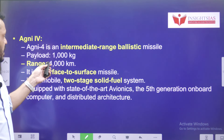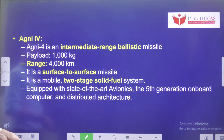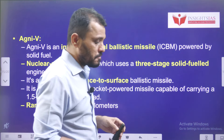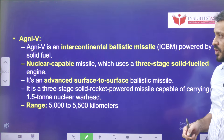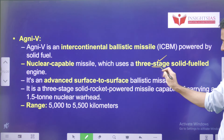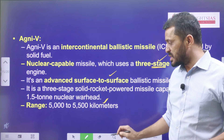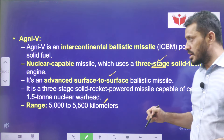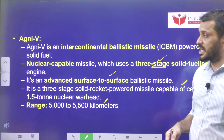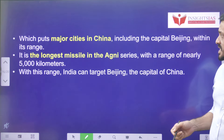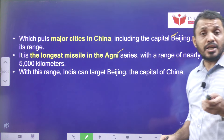Agni 4 has a range of around 4000 kilometers, a payload of 1000 kg, and is a surface-to-surface, two-stage solid-fuel missile. Agni 5 is the intercontinental ballistic missile — very important — meaning it can target places beyond the Asian continent. It is fully powered by solid fuel, nuclear-capable, and uses a three-stage surface-to-surface configuration. Its range is 5000 to 5500 kilometers and it can deliver a nuclear payload of up to 1.5 tons, capable of targeting even major cities in China including the capital Beijing. India is also in the process of developing an Agni 6 missile.